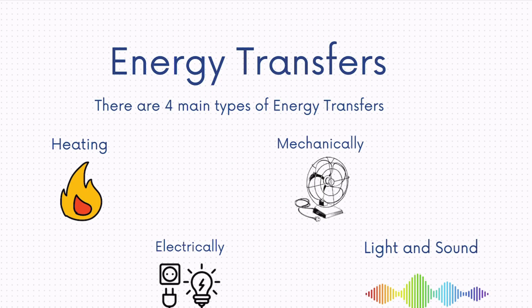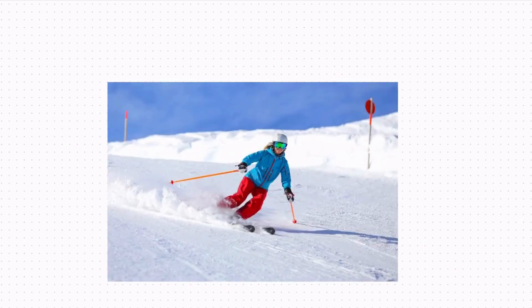To look at a complete energy transfer example, we're going to take a look at this picture of the skier. A skier has energy in its gravitational potential energy store at the top of the mountain, and when they move down the mountain they transfer their energy to the kinetic energy store.